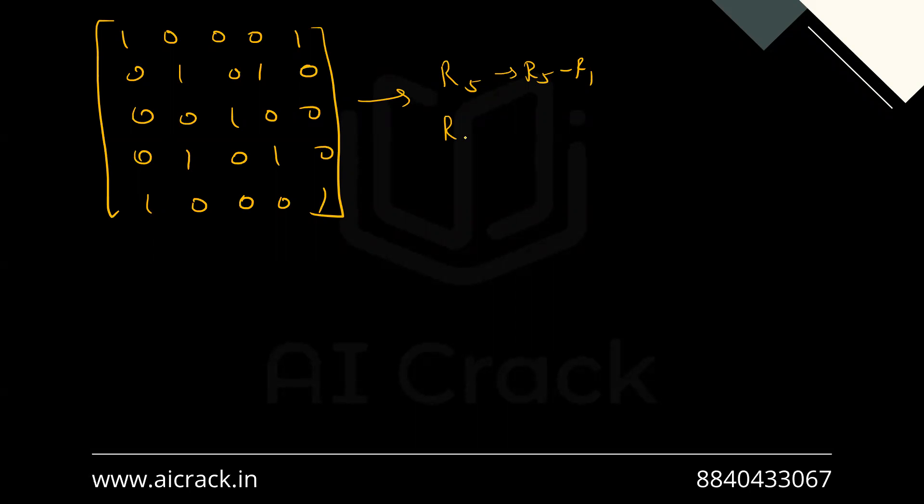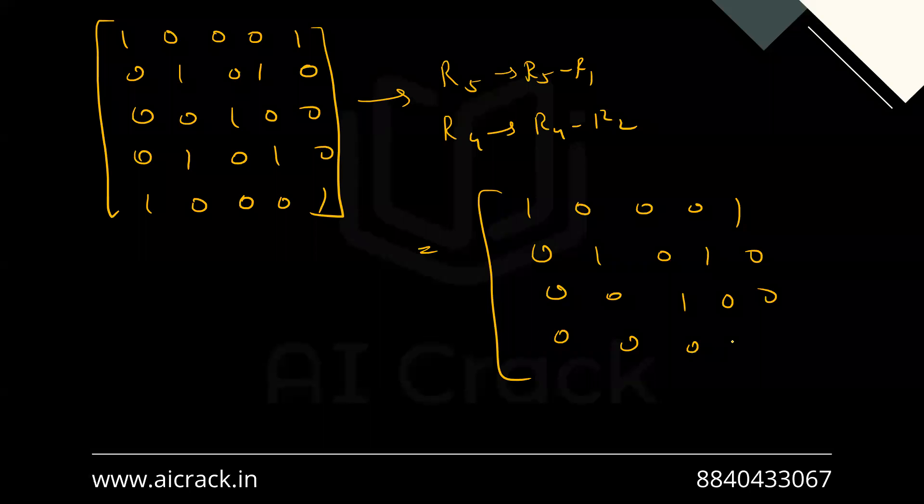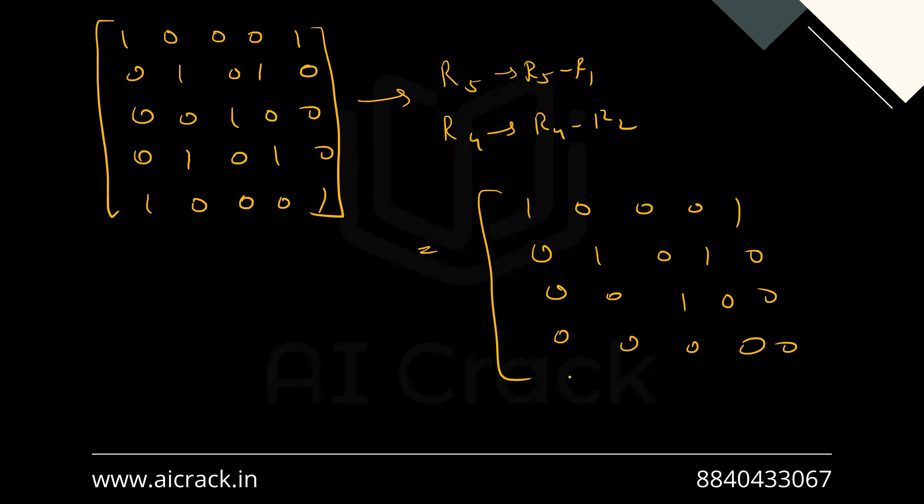That would give me r4 goes to r4 minus r2. We'll be able to create an upper triangular matrix. That would give me 1 0 0 0 0, 0 1 0 0 1, 0 0 1 0 0, and 0 0 0 0 0. We have got this matrix after the row transformations. Now this is an upper triangular matrix and we have 1, 2, and 3 non-zero rows.